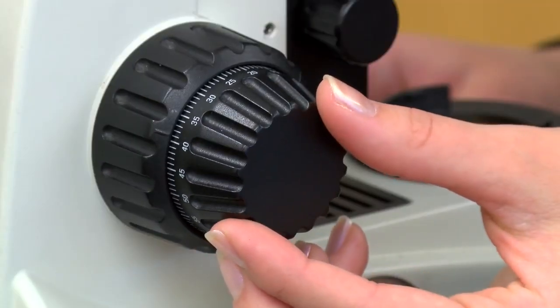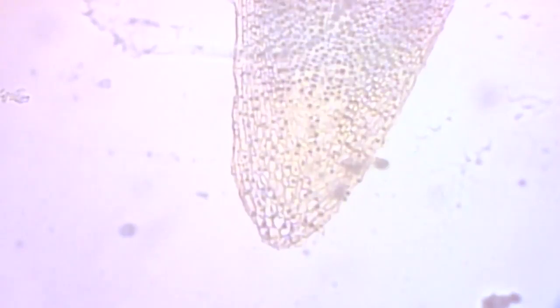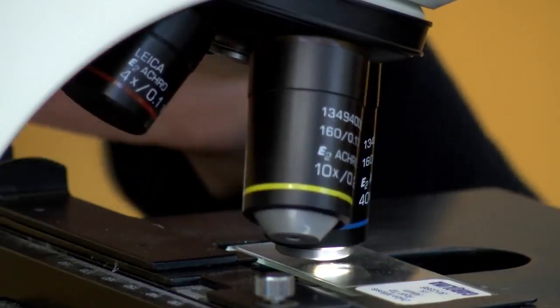Your specimen should be nearly in focus and you should only need to use the smaller fine focus knob. Again center the specimen and you are ready to move to the highest power lens, 40X.